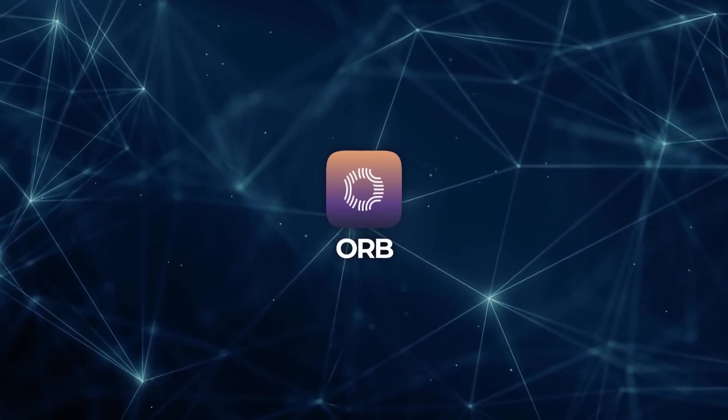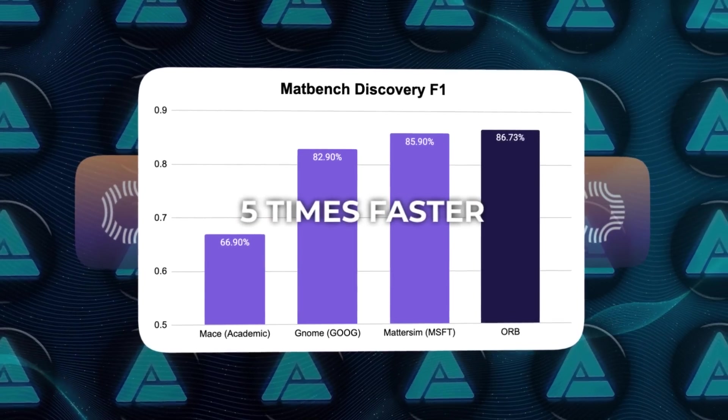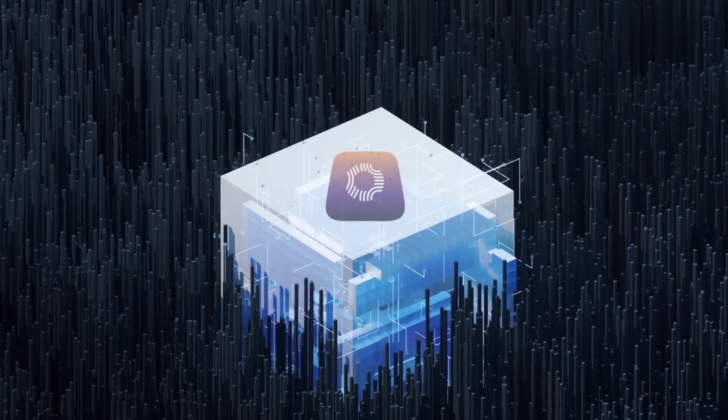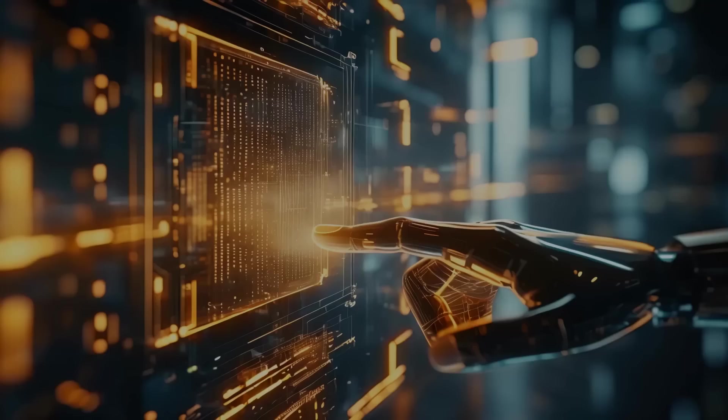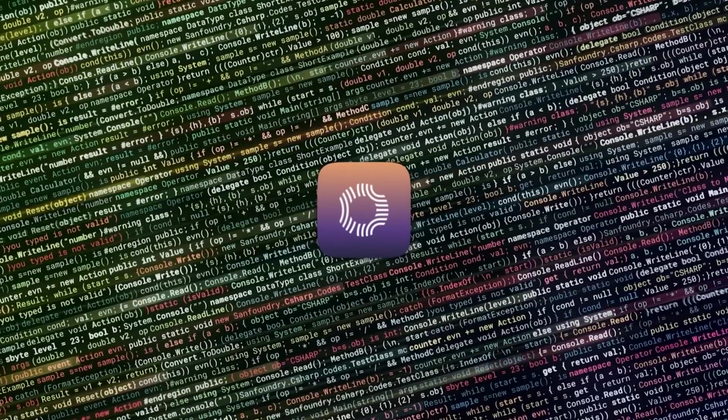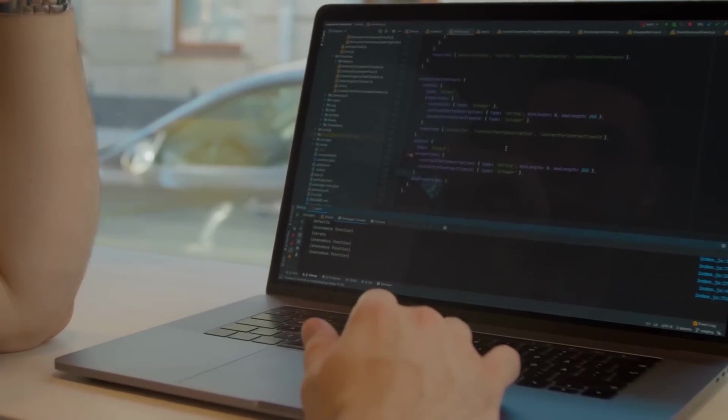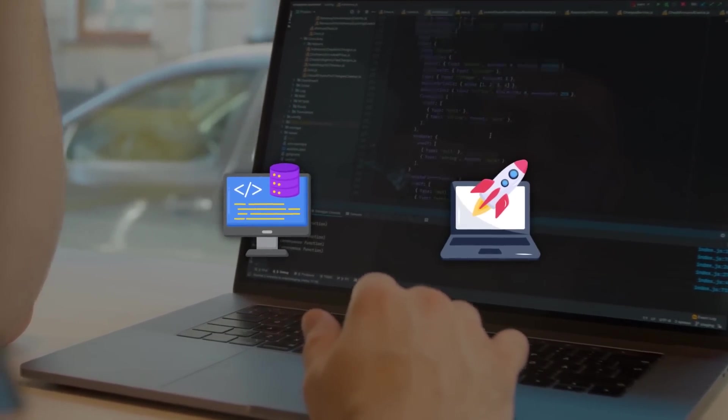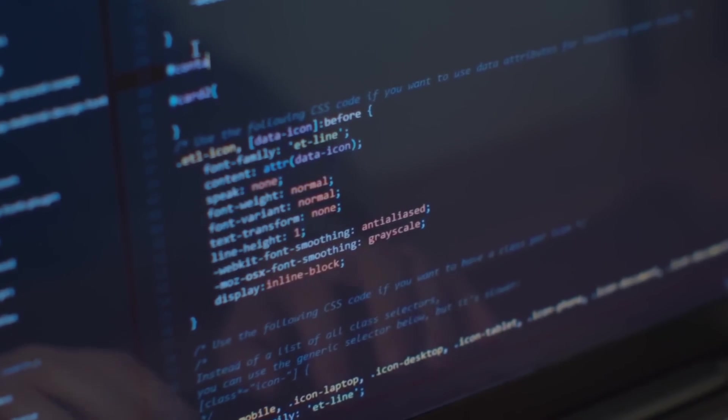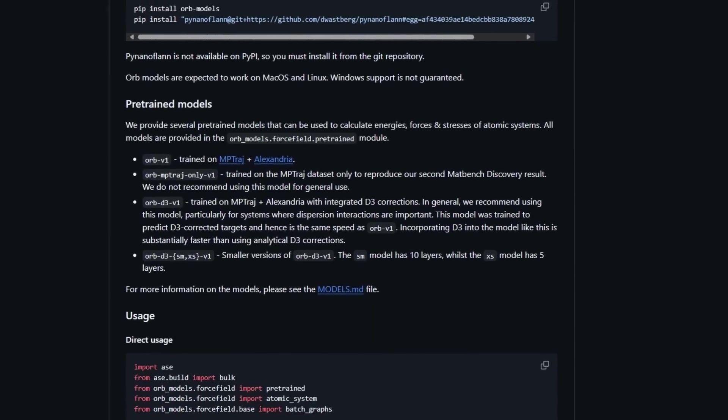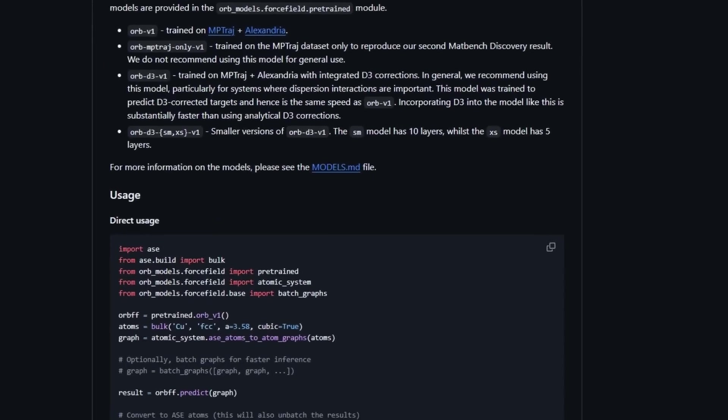Now, Orb isn't just faster than the competition. It's five times faster than the best alternatives for large-scale simulations. That's a huge leap forward. And we're not just talking about beating random models either. Orb is outperforming Google's and Microsoft's models when it comes to accuracy and speed. And here's where things get even more exciting. They've open-sourced it. Yup. It's free for non-commercial uses in startups. So anyone looking to develop new materials can jump in and use this tech. You can even go to their GitHub right now and check out the full technical breakdown.